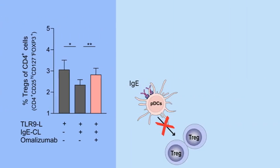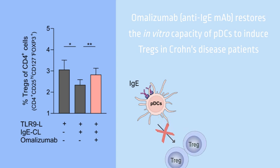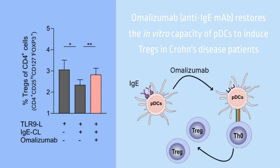Finally, we saw that the cross-linking of IgE with its high-affinity receptor in TLR9-ligand-activated plasmacytoid dendritic cells from Crohn's disease patients impairs their capacity to generate regulatory T cells, which is restored by pre-treatment of the plasmacytoid dendritic cells with the anti-IgE monoclonal antibody Omalizumab.